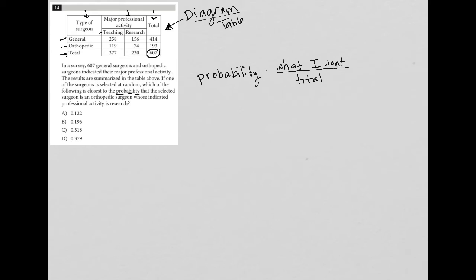So the table tells us that what we want is orthopedic, but the professional activity is research, which puts us here, which means that our numerator should be 74. There are 74 orthopedic surgeons whose major professional activity is research.